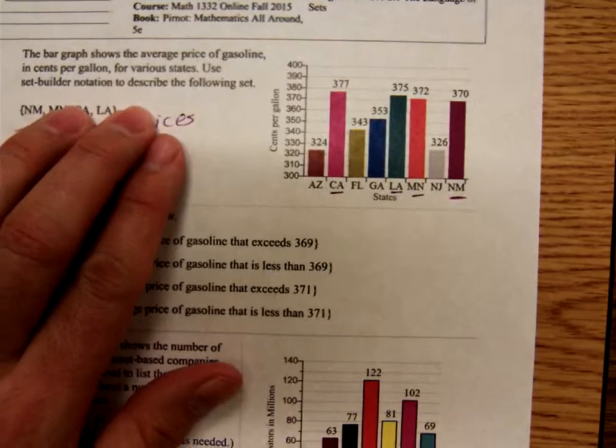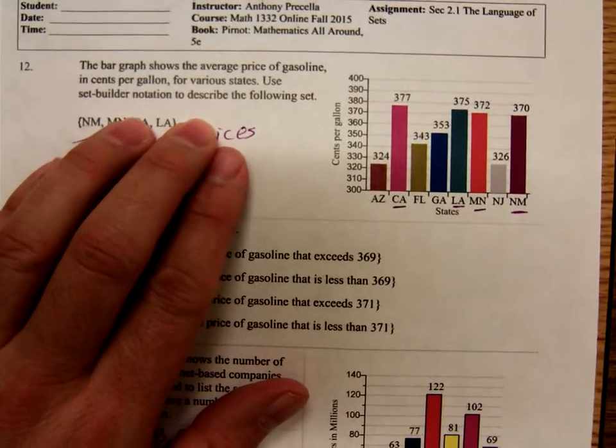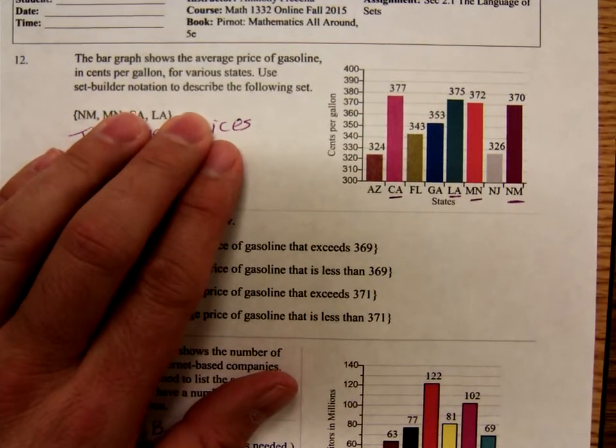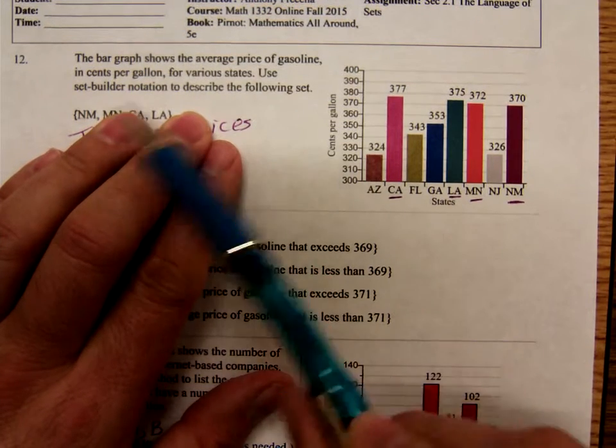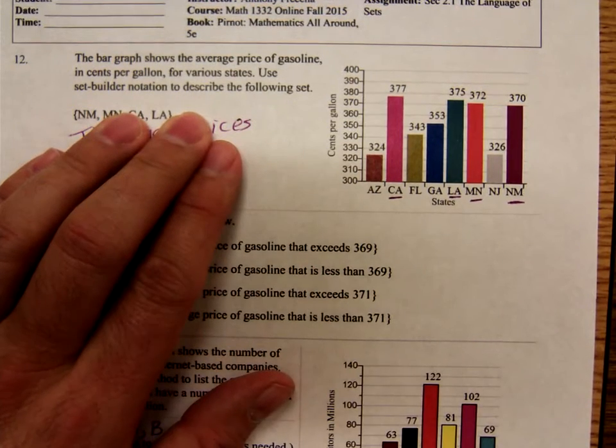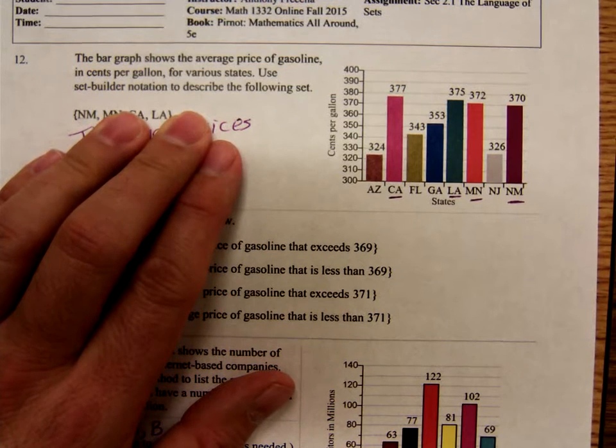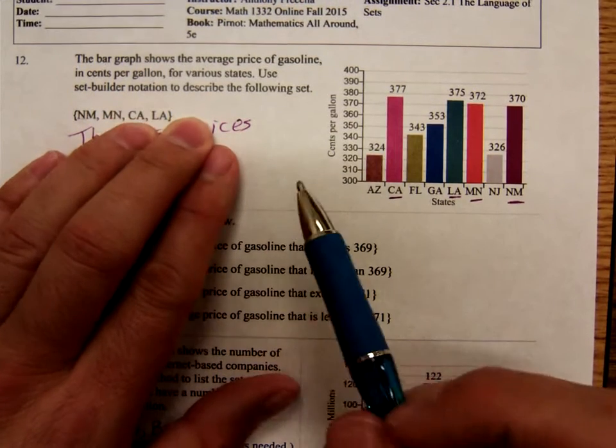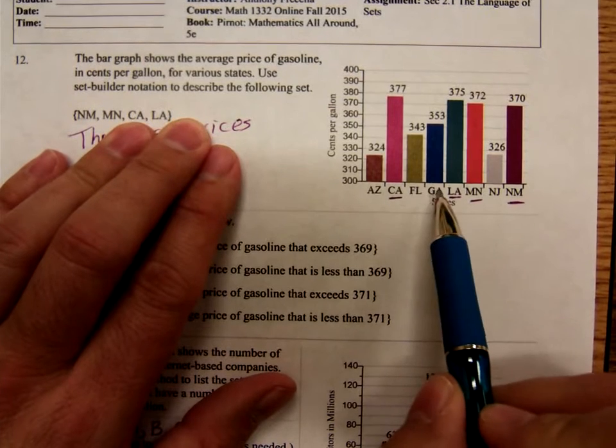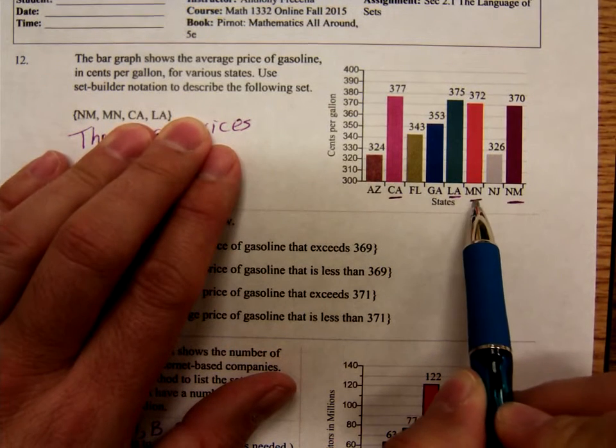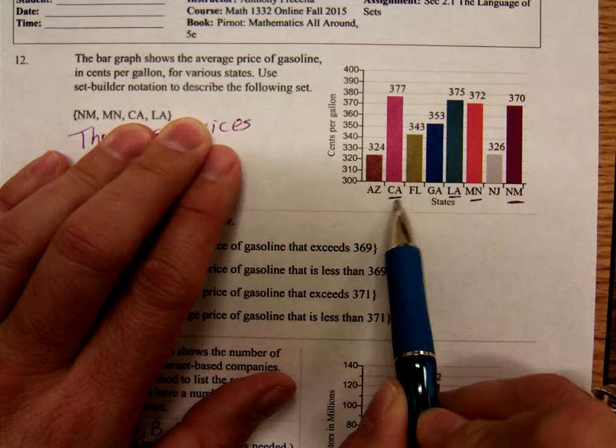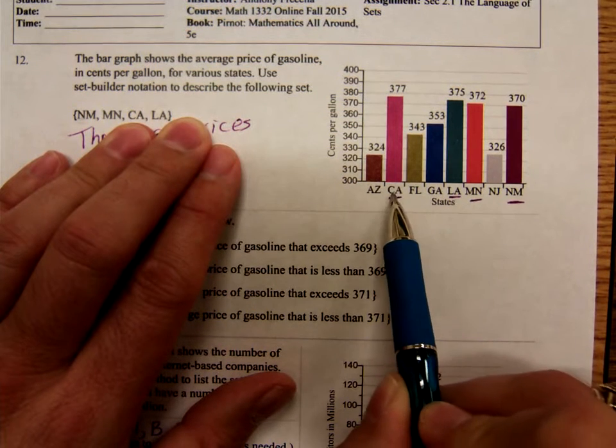Number 12. The bar graph shows the average price of gasoline in cents per gallon for various states. Use set builder notation to describe the following. Look at the sets: NM New Mexico, Minnesota, California, and Louisiana. So let's look at all of those.